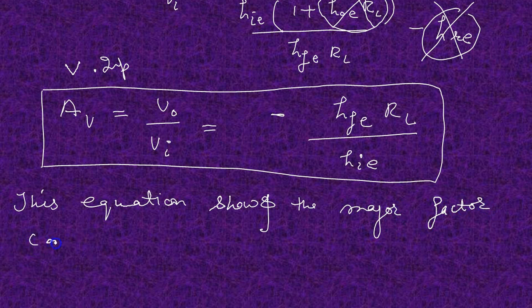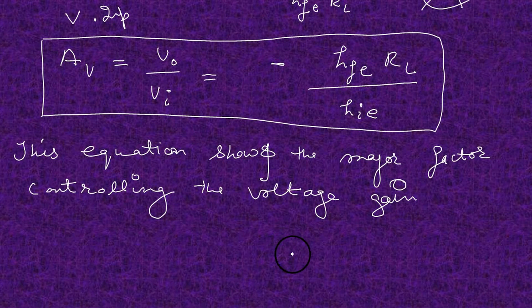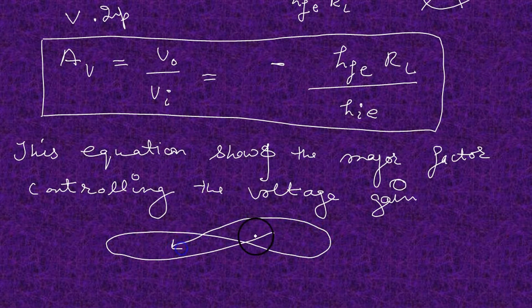HIE and HFE, okay — they are the major factors, as well as RL. So this is all about the h-parameter equivalent circuit and voltage gain. Thank you very much.